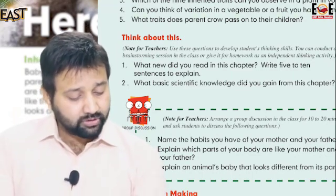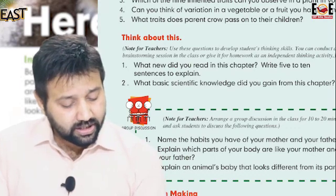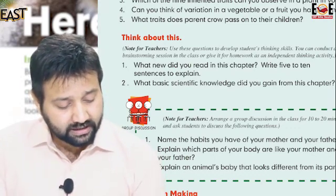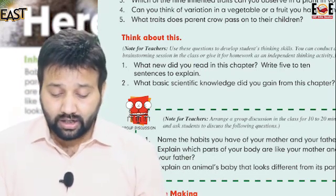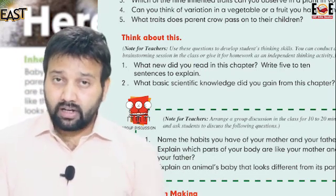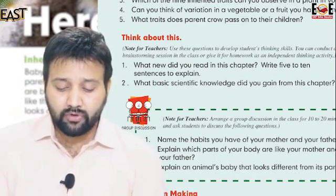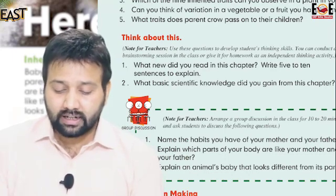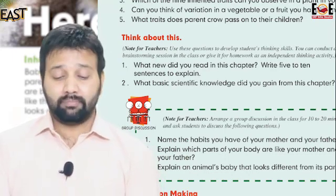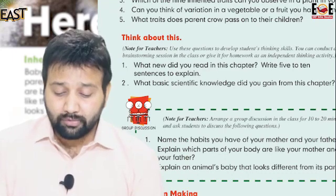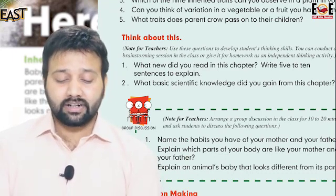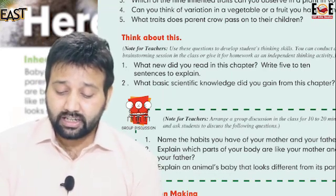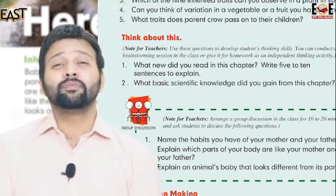Now let's look at the second thinking task: what basic scientific knowledge did you gain from this chapter? Students, we gained very fruitful knowledge about what inheritance is and what the variations in animals and plants are. We also came to know why plants and animals differ from each other but still look like their parents and their species.